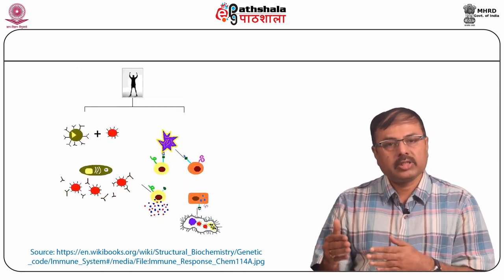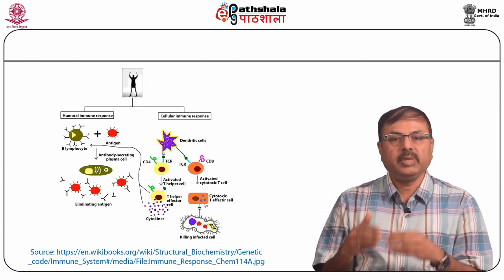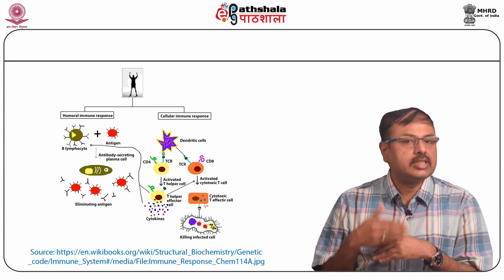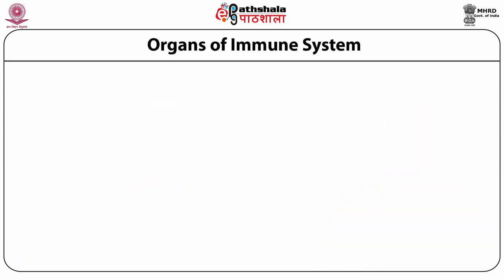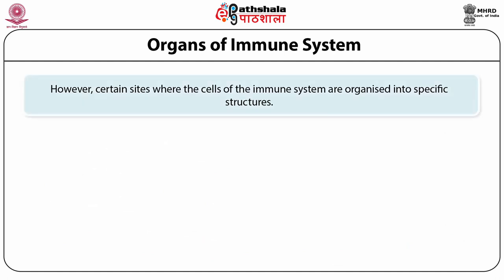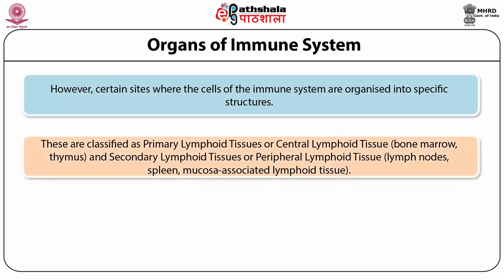Improper development of thymus gland means that T cell production is diminished. The immune system functions throughout the body; however, certain sites where the cells of immune system are organized into specific structures are classified as primary lymphoid organs and secondary lymphoid organs.